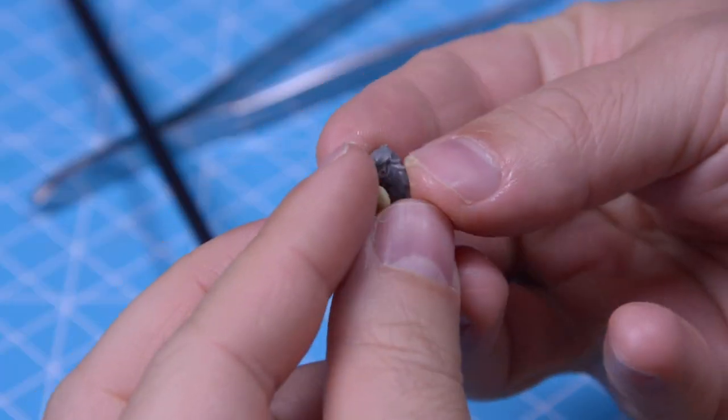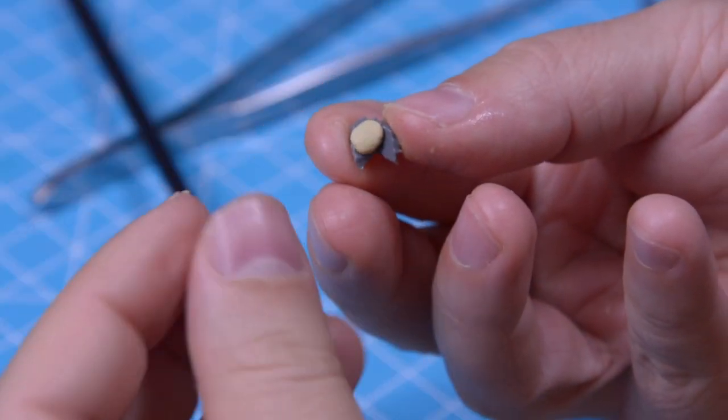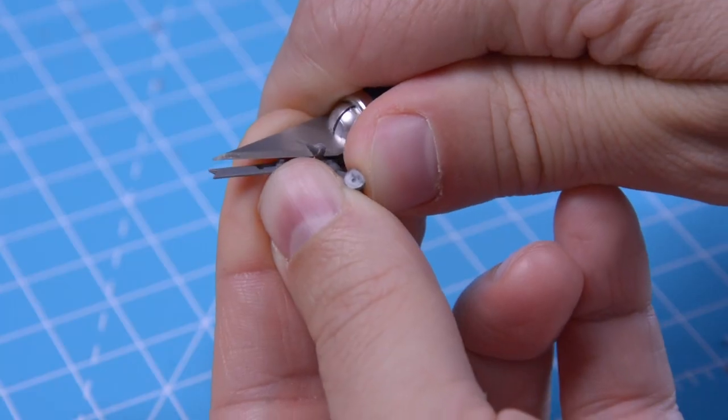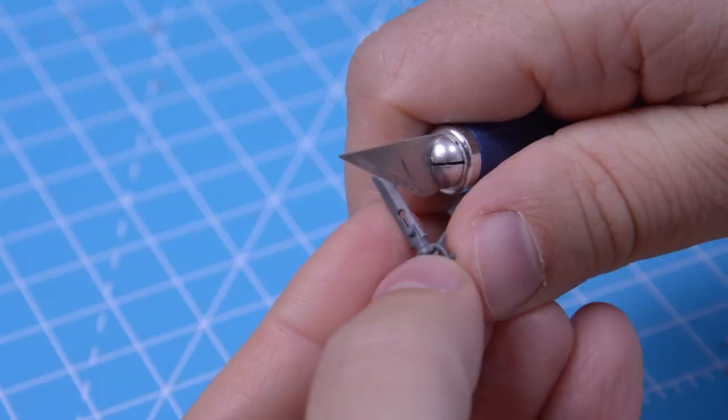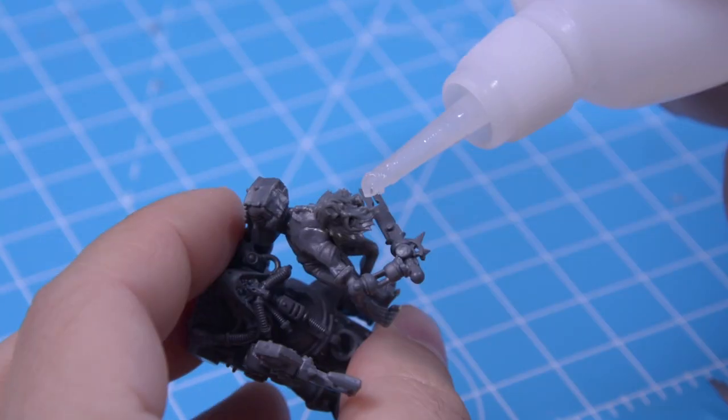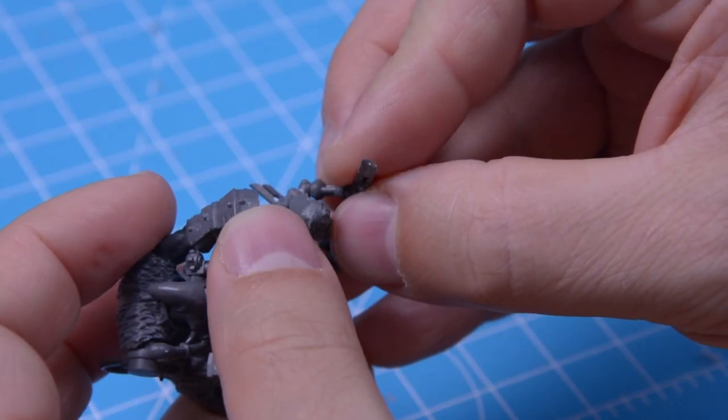Now it's time for the ghoul to get a head. Like previously, I use Milliput, which I use to fill the gaps and blend the neck with the head. I remove a few details that I don't like and make a couple of dents in the blades. Then I glue the arms in place, and that was it for those guys.